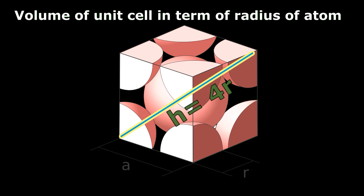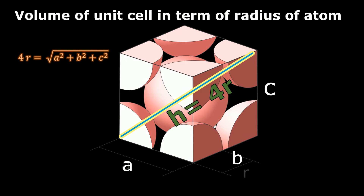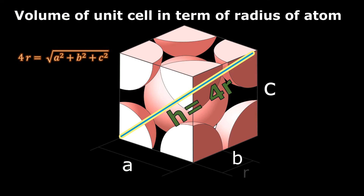Now if we draw a line from one corner of the cube to the other corner passing through the center of this cube, then the length of the diagonal will be equal to 4r — four times the radius of the atom. Using the Pythagorean theorem in three dimensions, we can relate the length of the sides with the diagonal by the relation: the diagonal equals √(a² + b² + c²). In a cube, the length of all sides are equal: a = b = c.